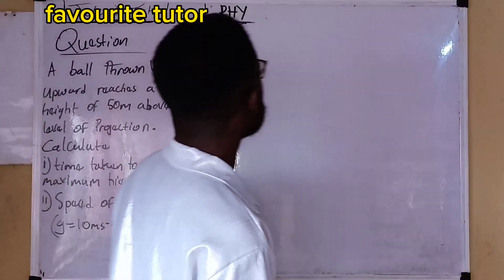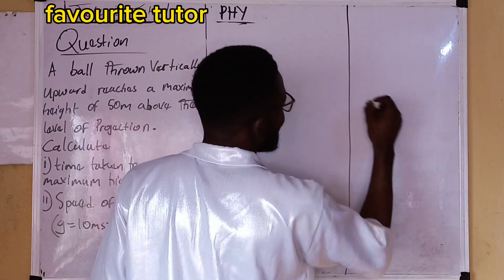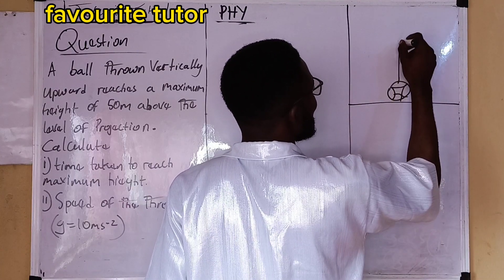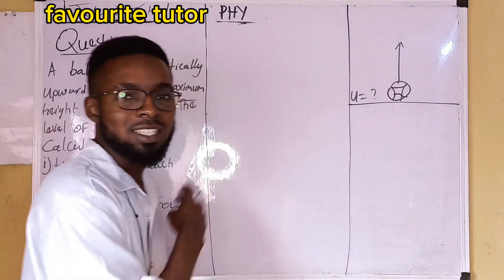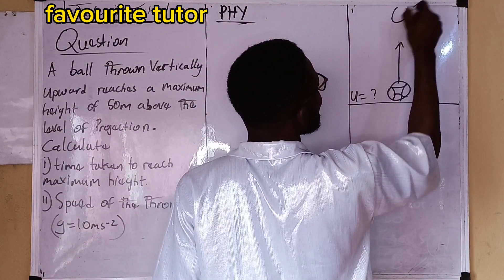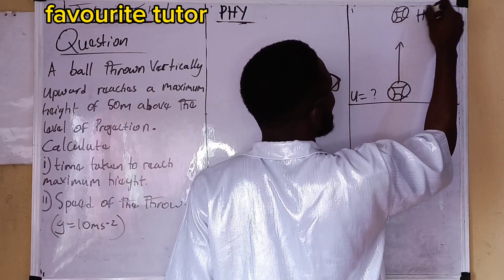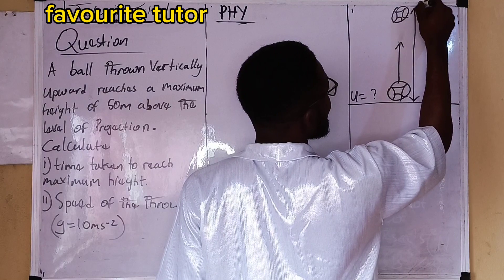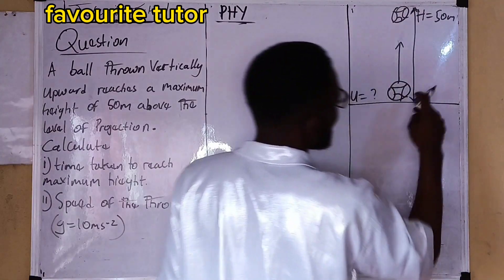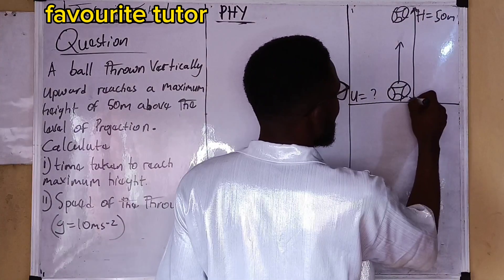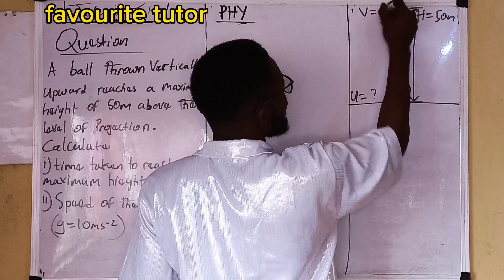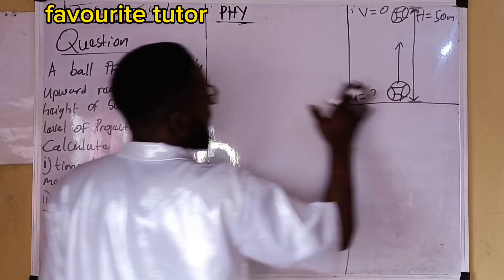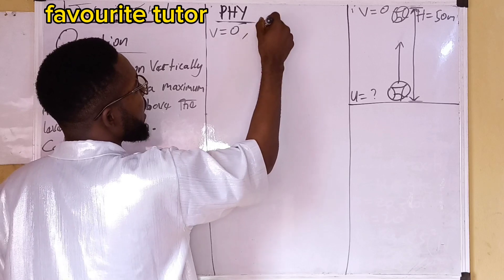Let's use a diagram to illustrate this. If the ball is thrown vertically upward with some initial velocity — that velocity is not stated in the question — at maximum height the ball is going upward. The maximum height is 50 meters from the point of projection. At maximum height, the final velocity is zero.